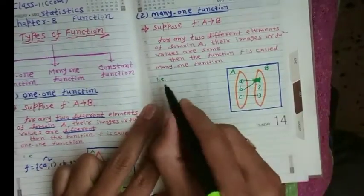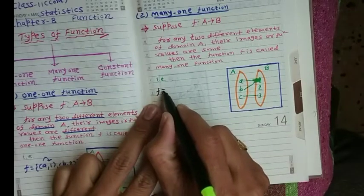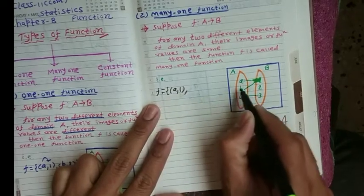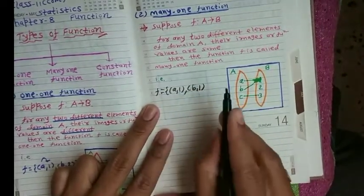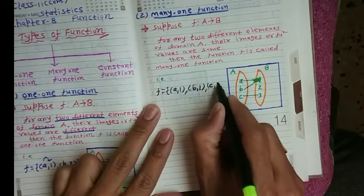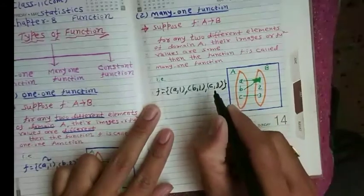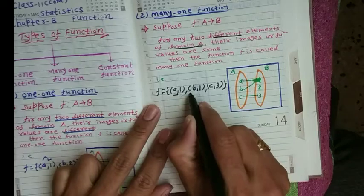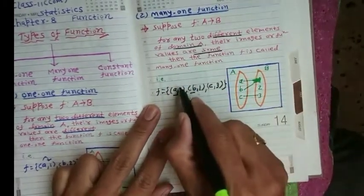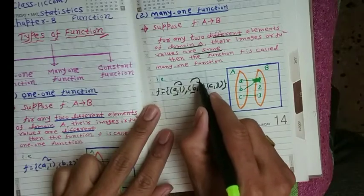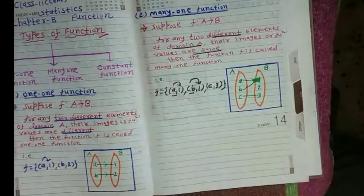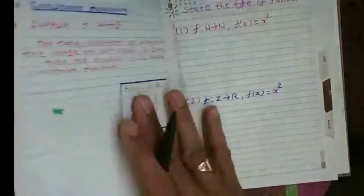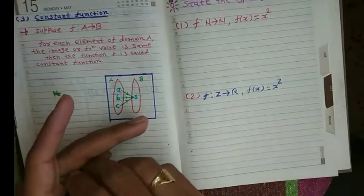Here we write: image of a is 1, and image of b is also 1, and (c, 3). Taking different elements from the domain — first a, then b — both give the same value of 1. Since a maps to 1 and b also maps to 1, this type of function is called a many-one function.